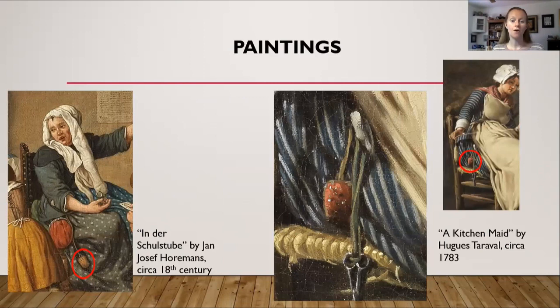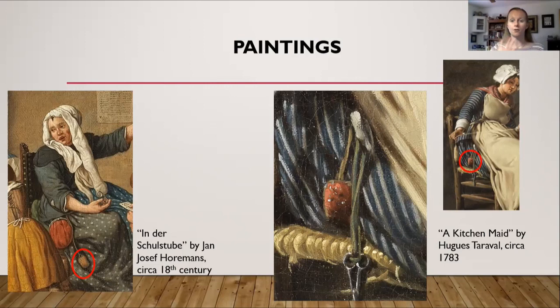Here are some examples of pin cushions in history. On the left is a painting from the 18th century showing a woman wearing her pin cushion — a small rectangle attached to a long cord tied to her belt. On the right is a painting from 1783, zoomed in to show she is wearing both a pin cushion and scissors.